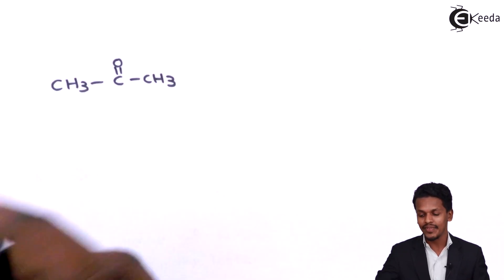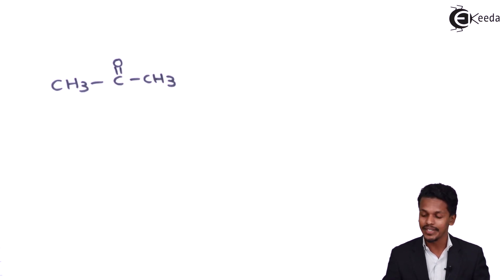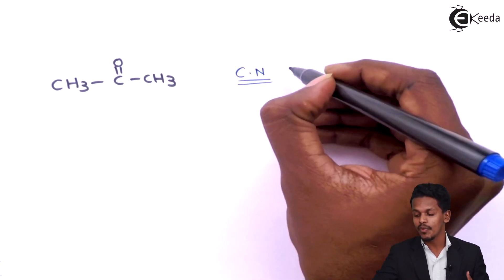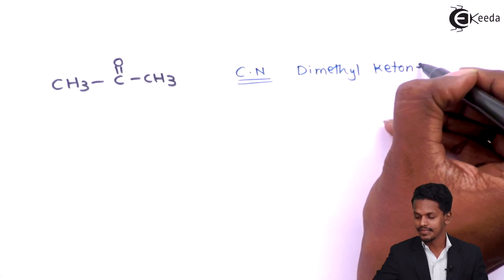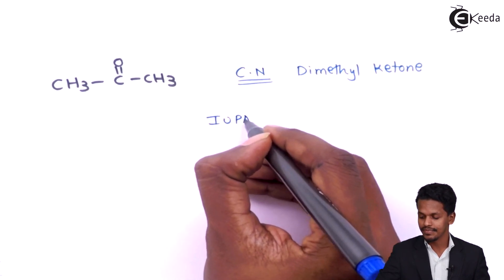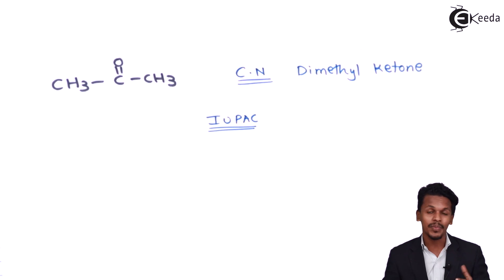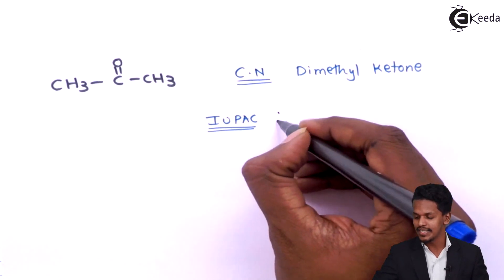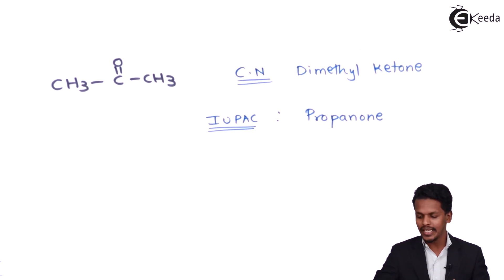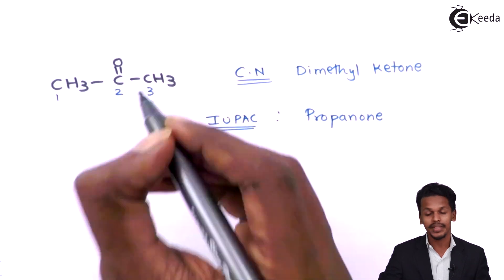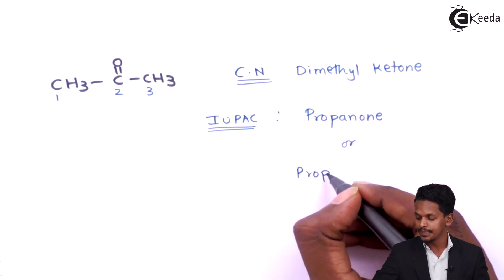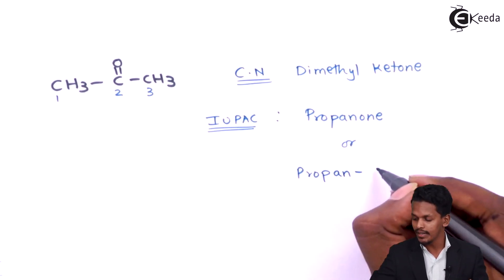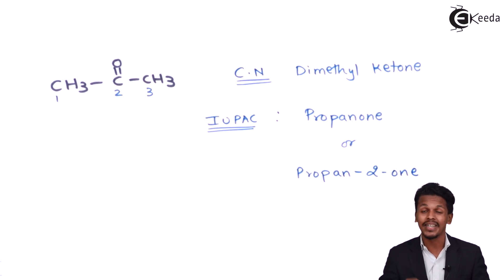For the compound CH3-C(=O)-CH3, both alkyl groups are methyl, so the common name is dimethyl ketone. For IUPAC nomenclature, we count the total carbons in the straight chain: 1, 2, 3. With 3 carbons, the alkane would be propane, but since it is a ketone, the name is propanone. The carbonyl is at carbon 2, so we can also write it as propan-2-one.